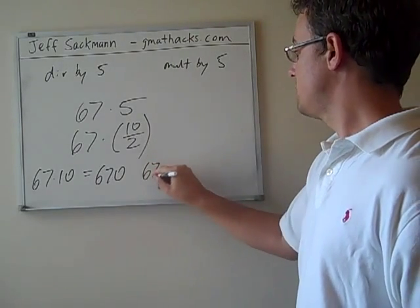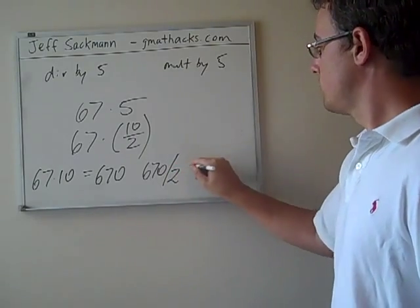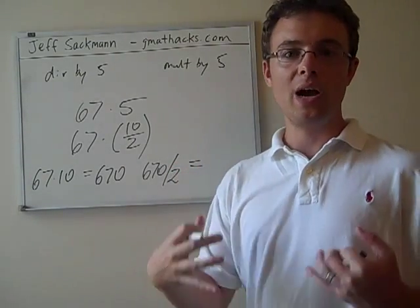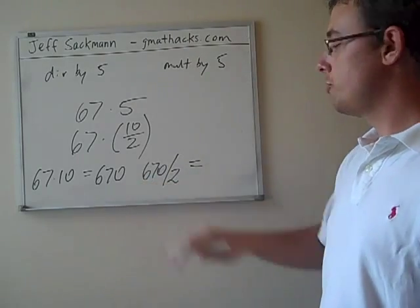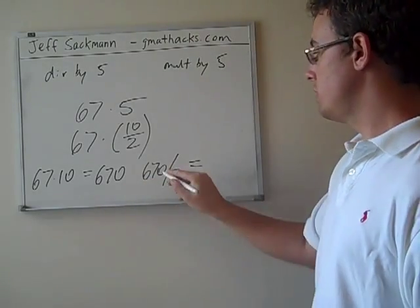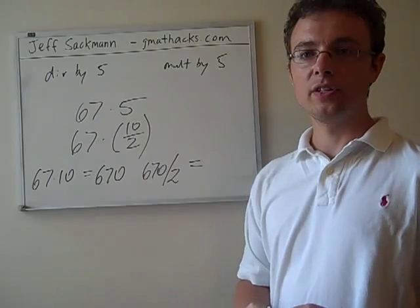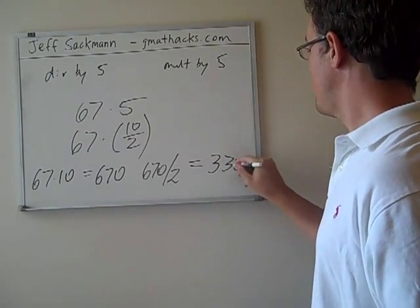Then, we're doing 670 divided by 2. If you want to break it down the way I would do it in my head, we take 600 divided by 2. That's 300. 70 divided by 2 is 35. So we're at 335.